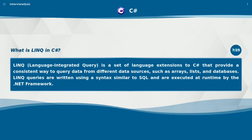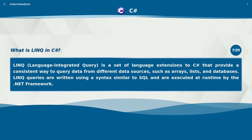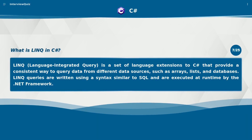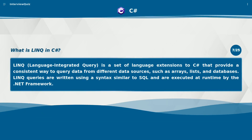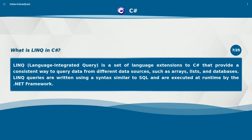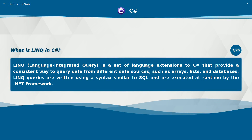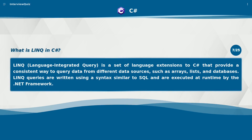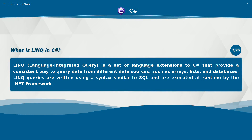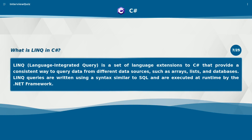What is LINQ in C#? LINQ, Language Integrated Query, is a set of language extensions to C# that provide a consistent way to query data from different data sources, such as arrays, lists, and databases. LINQ queries are written using a syntax similar to SQL and are executed at runtime by the .NET Framework.